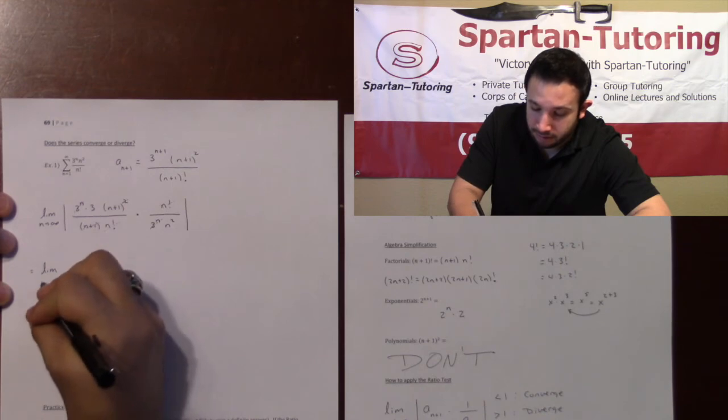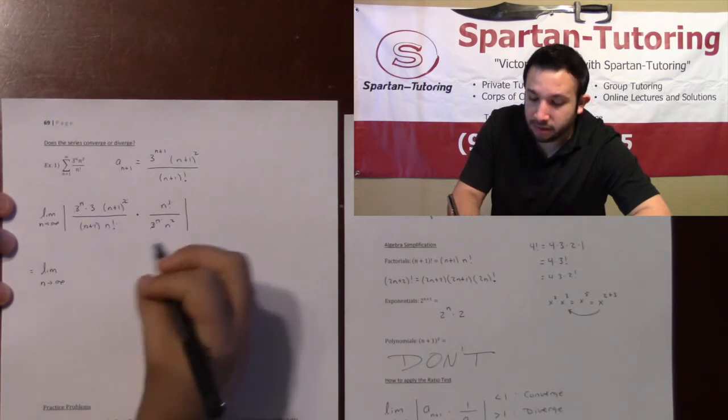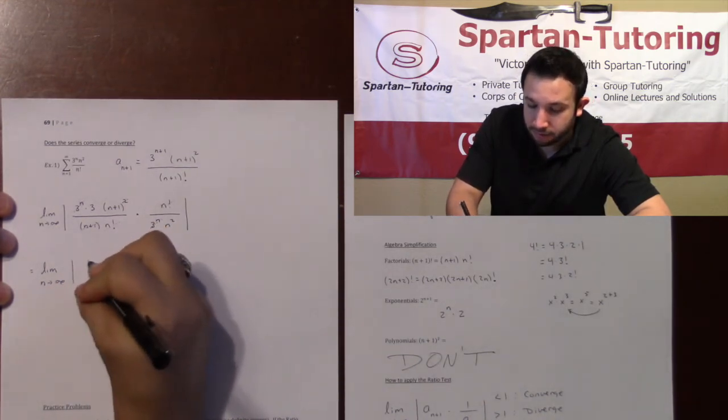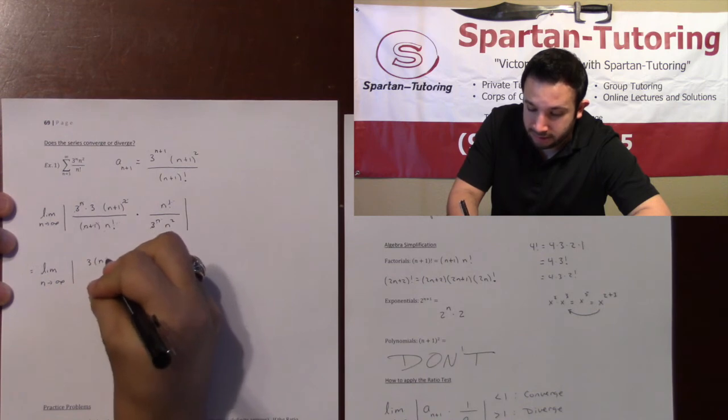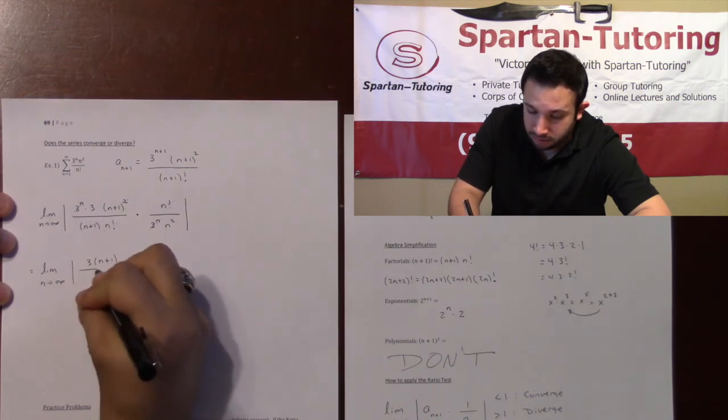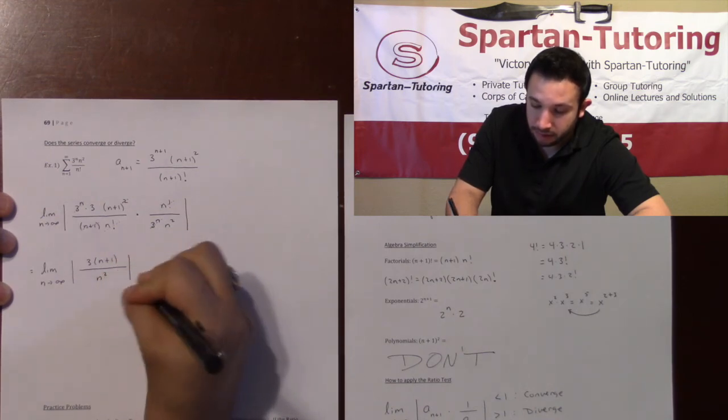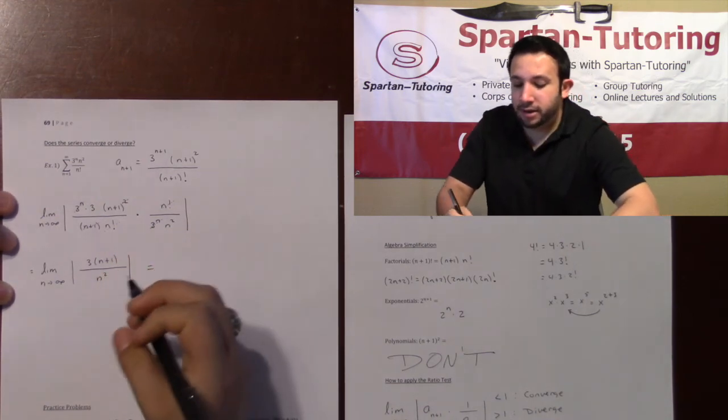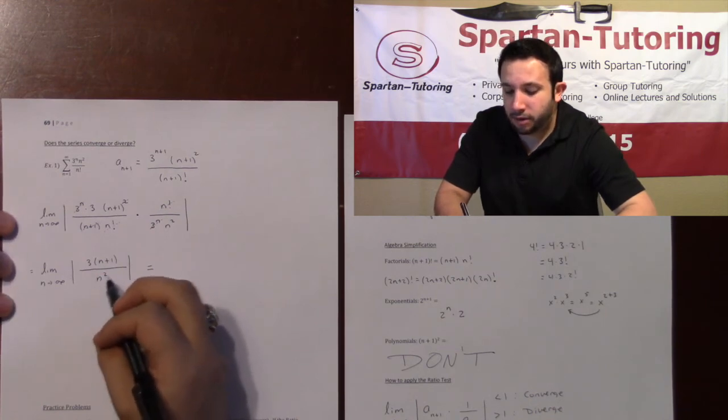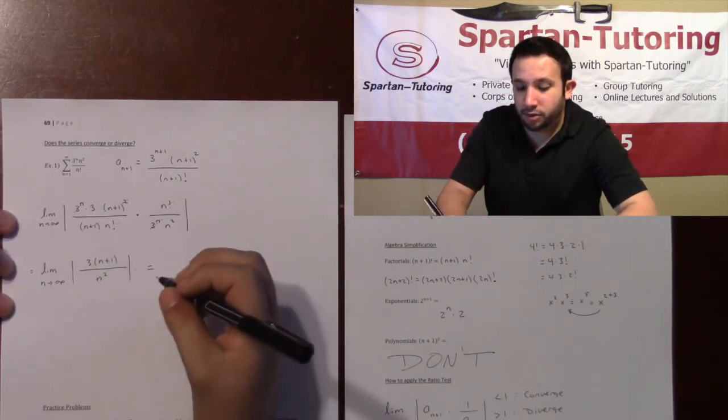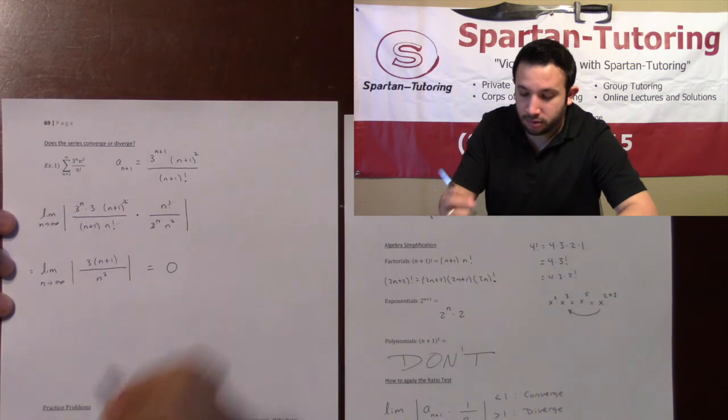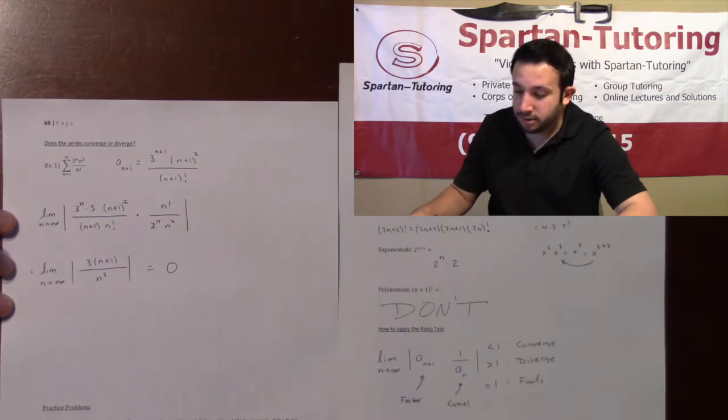And so what I'm going to be left with is the limit as n goes to infinity. On top I'm left with the absolute value of 3 times n plus 1 divided by—and then I have an n squared. And when I take this limit to infinity, this is bottom heavy: highest power on bottom is bigger than on top, and those always go to 0.